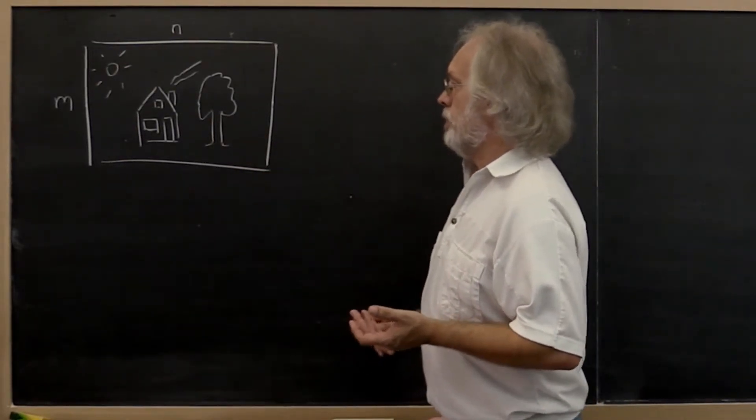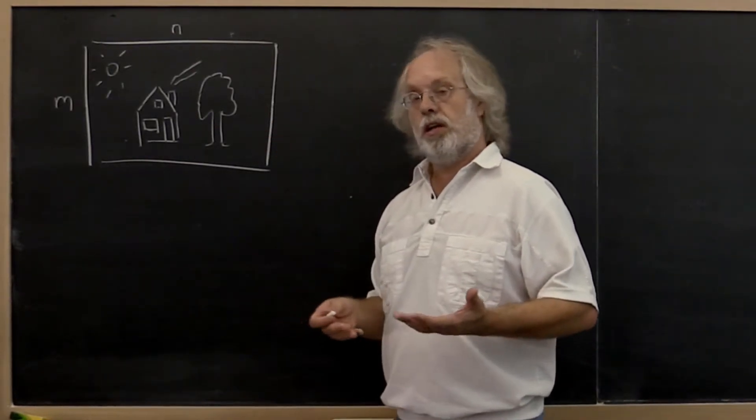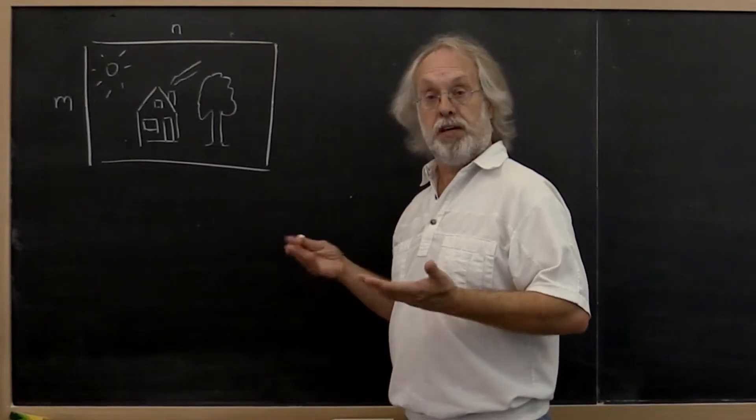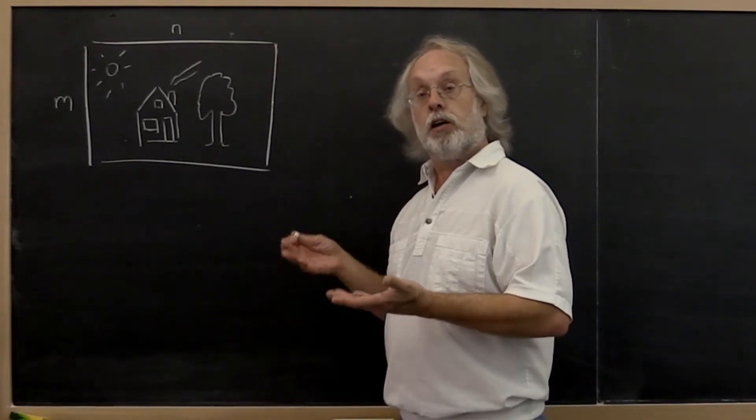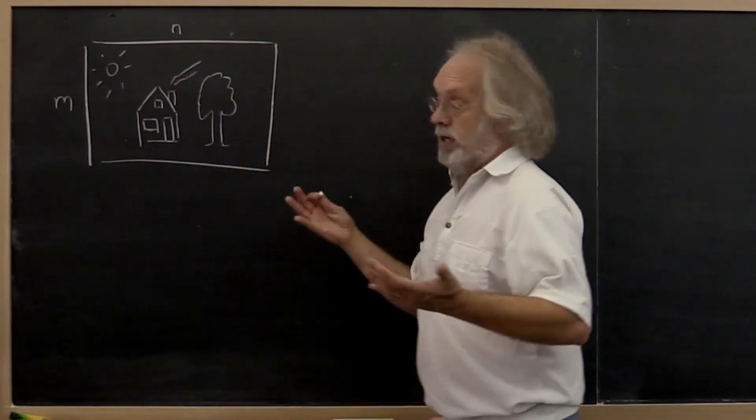Let's say you take a picture with your digital camera. The picture really is stored as a two-dimensional array of pixels. And pixels really are numerical values. So we can think of it as an n by n matrix.